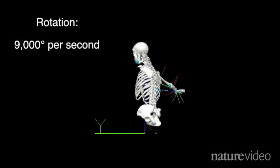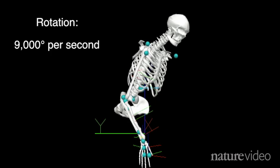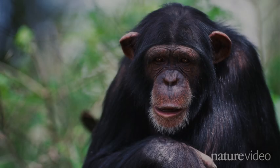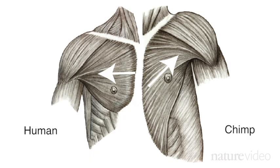The rotation is remarkably fast. In fact, it's the fastest motion the human body produces. A chimp's ability to throw is limited by its high, shrugged shoulders. Our shoulders sit lower and face outwards, giving us a greater range of motion and allowing us to store far more elastic energy in the shoulder.